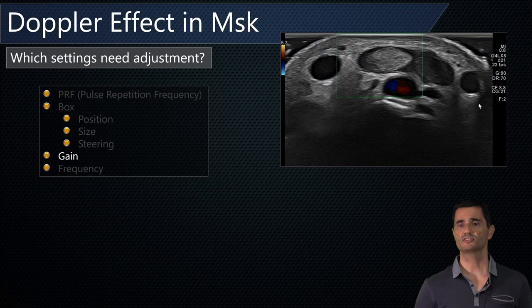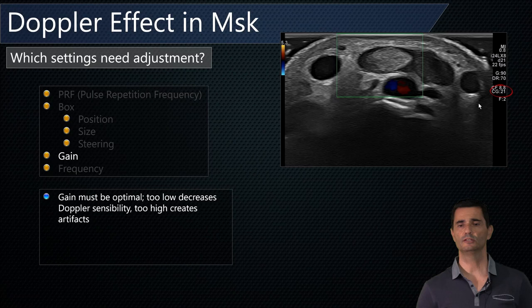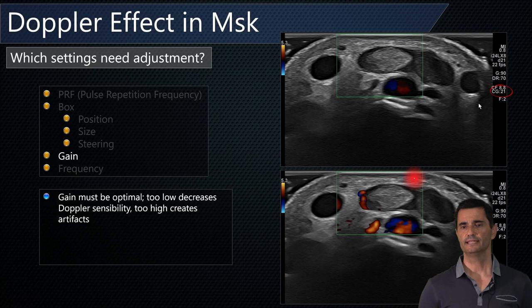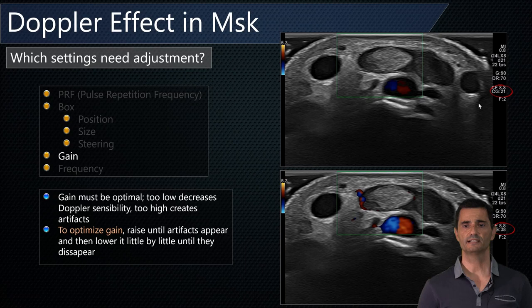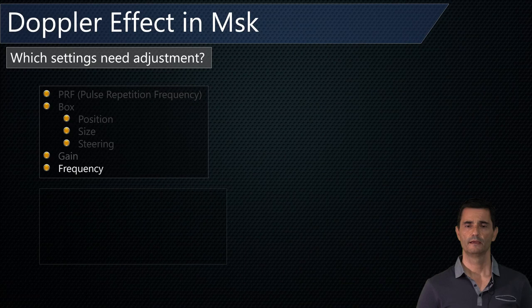Gain is the brightness of the Doppler. With low gain, the Doppler will be less sensitive. With higher gain, artifacts will appear. The best approach is to slowly increase the gain until the first artifacts appear, then decrease it slightly until the artifacts disappear — this gives you the optimal gain setting.